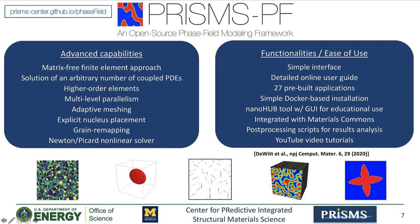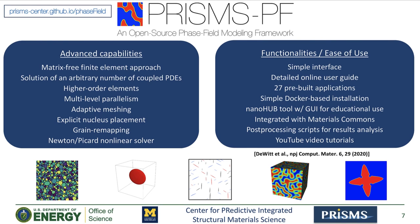On the right panel, we have some of the functionalities and features that make PRISMS-PF user-friendly, including a simple interface where the typical user only needs to modify a few files in an application directory. There is a detailed online user guide, a total of 27 built-in applications, a simple Docker-based installation option, a recently upgraded NanoHub tool for educational use, integration with the Materials Commons repository for easy data sharing, a new suite of post-processing scripts for results analysis, and a new series of short video tutorials on YouTube which we plan to keep expanding. I also want to point out a reference to an article we published about a year ago with more details about the framework structure, features, and performance.